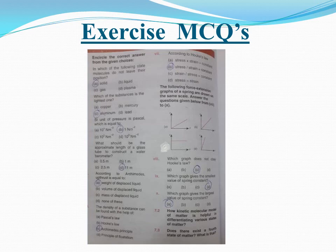According to Hooke's law, stress over strain equals a constant — option B is correct. For the force-extension graphs drawn on the same scale: which graph does not obey Hooke's law? Hooke's law graph is a straight line with some slope, but in option C the slope is zero, so it does not obey Hooke's law — answer is C.